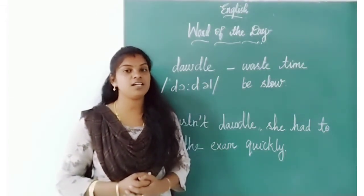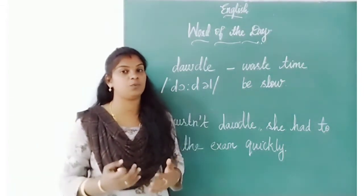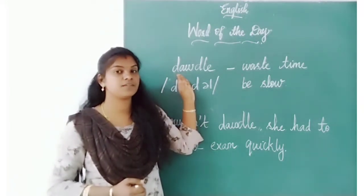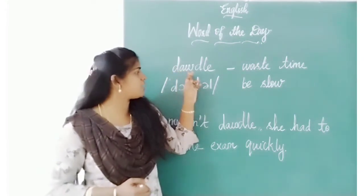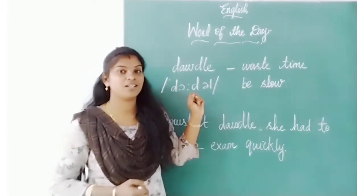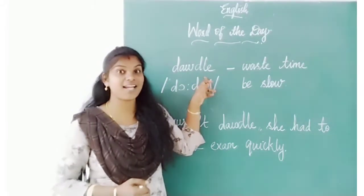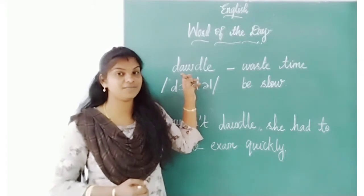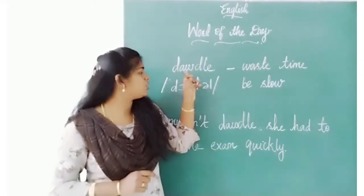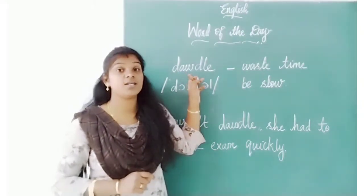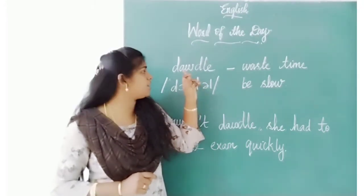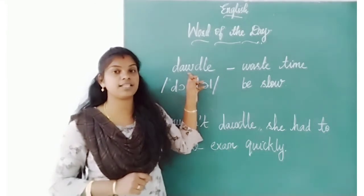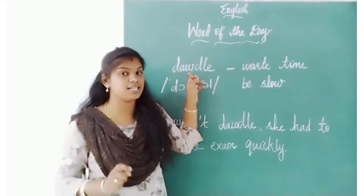Today I will introduce a new word. Read this word: D-A-W-D-L-E. You may say 'doodle' — but are you sure? The correct pronunciation is 'dawdle.' Here we are writing an A, but we pronounce it as 'dawdle.'